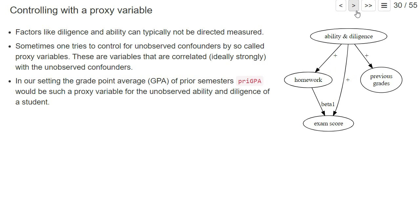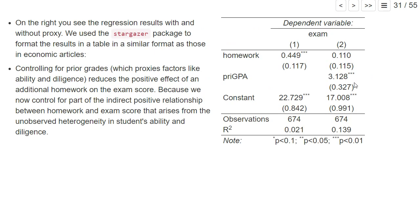Now if we add a proxy for ability and diligence, our estimator for the effect of homework on exam goes down. But do you think that it's reasonable that now our estimator here of 0.11 is an estimate of the true causal effect with only a small bias?